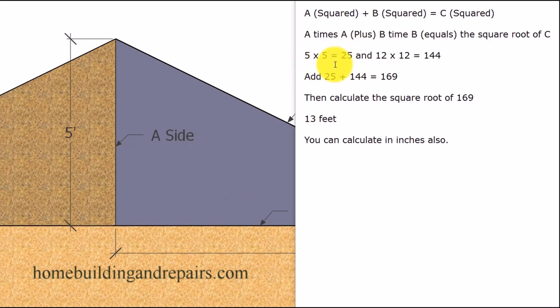So 5 times 5 equals 25. We've got to multiply this number by itself to get it squared. And then 12 times 12 equals 144. This is side B. And if we add these two numbers together, 25 plus 144, we get 169.